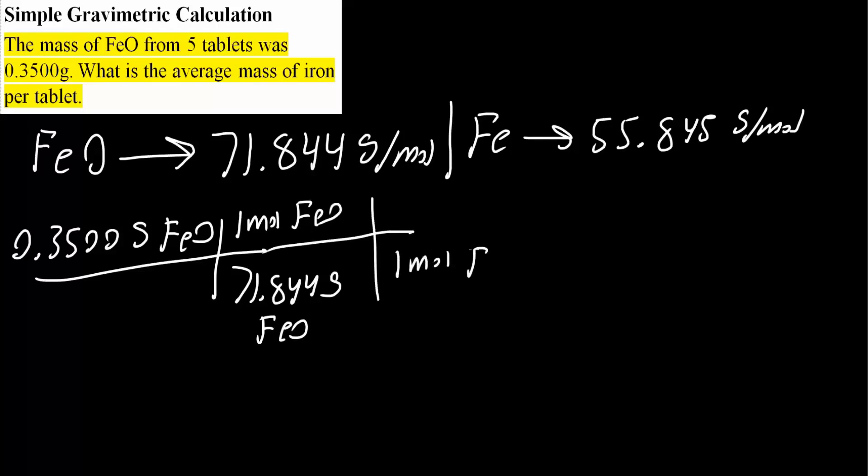One mole of FeO contains one mole of Fe because it's a one-to-one ratio—one mole of Fe and one mole of O. It's not Fe2O3 where Fe would be two; here we have FeO, and so that's why it's a one-to-one ratio.